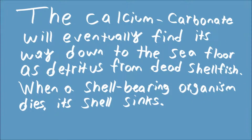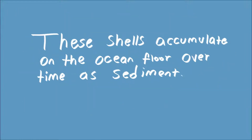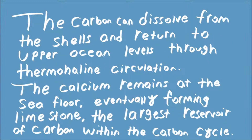The calcium carbonate will eventually find its way down to the sea floor as detritus from dead shellfish. When a shell-bearing organism dies, its shell sinks. These shells accumulate on the ocean floor over time as sediment. The carbon can dissolve from the shells and return to upper ocean levels through thermohaline circulation. The calcium remains at the sea floor, eventually forming limestone, the largest reservoir of carbon within the carbon cycle.